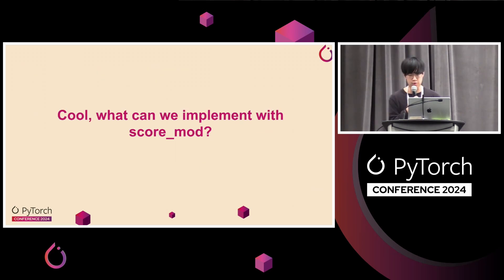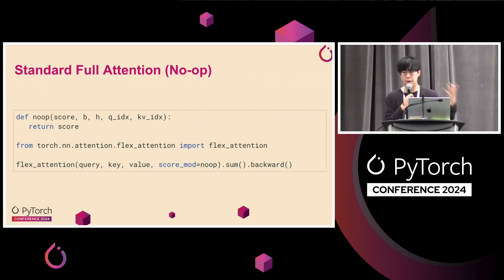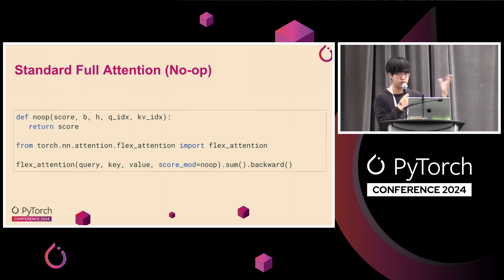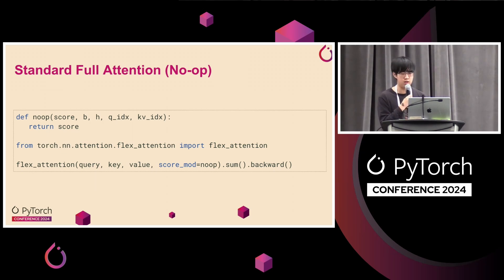To go through a brief tour of what you can implement with score mod: for standard full bidirectional attention, you just return the score directly — one-to-one, you don't do anything — and this gives you your regular full attention kernel.